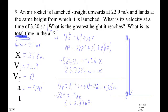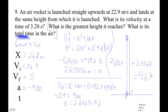Notice the question asks for total time in the air, not just time to the top. So it's going to spend 2.3367 seconds going up and 2.3367 seconds coming down. Multiply by two to get the total time in the air: 4.67 seconds. Just be careful - sometimes it asks for time to the top, sometimes total time in the air, so be savvy about which one is being asked.